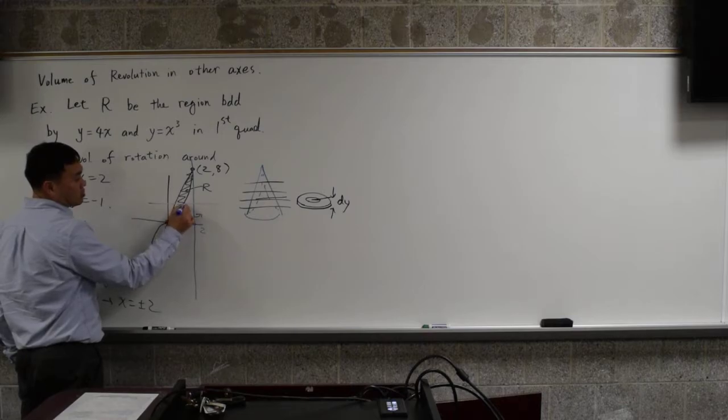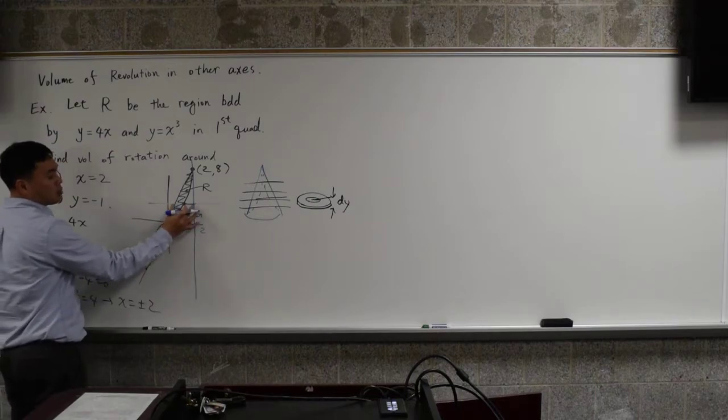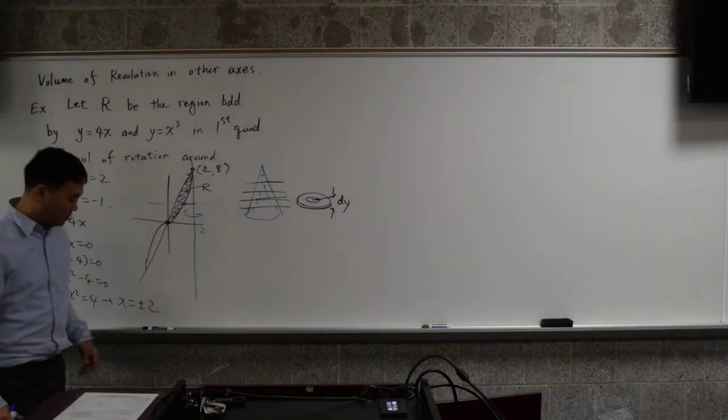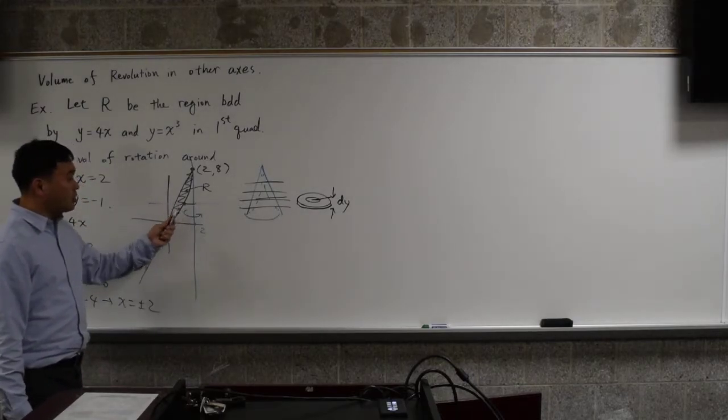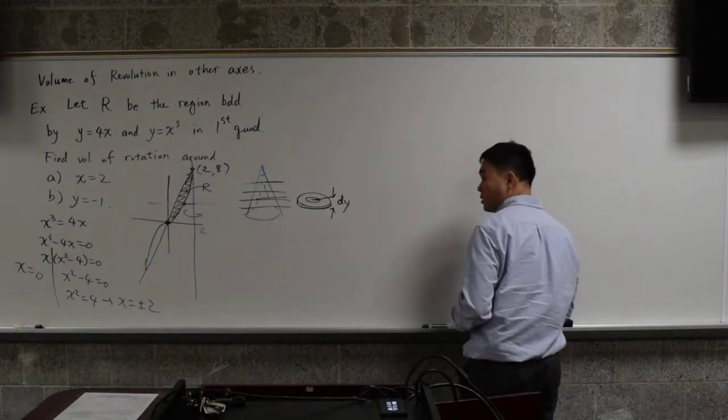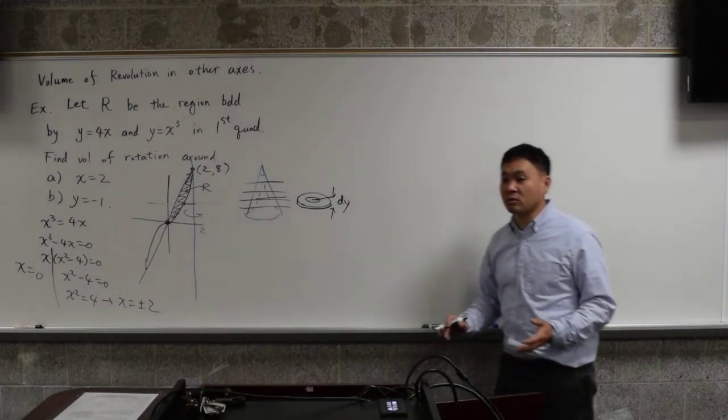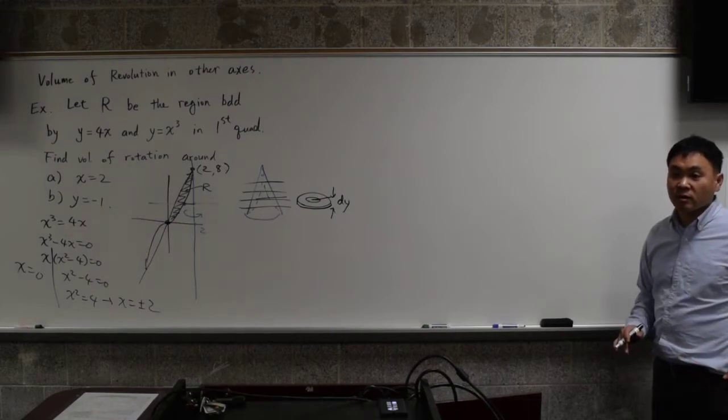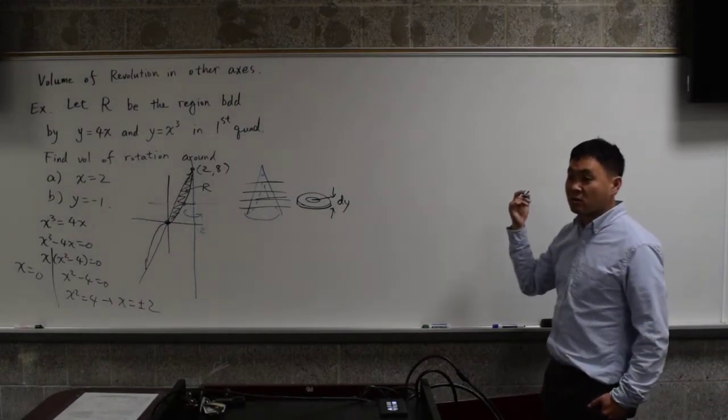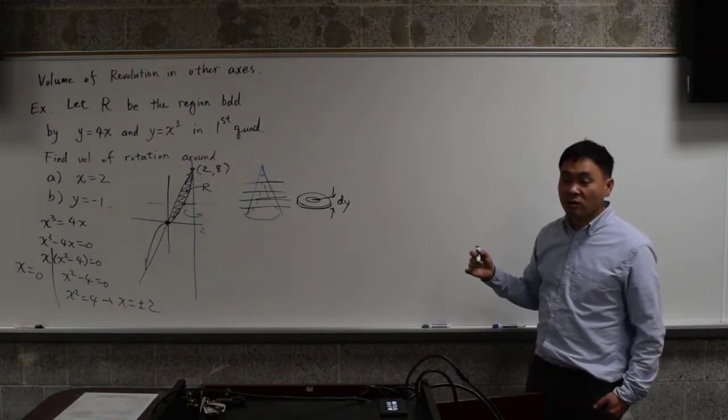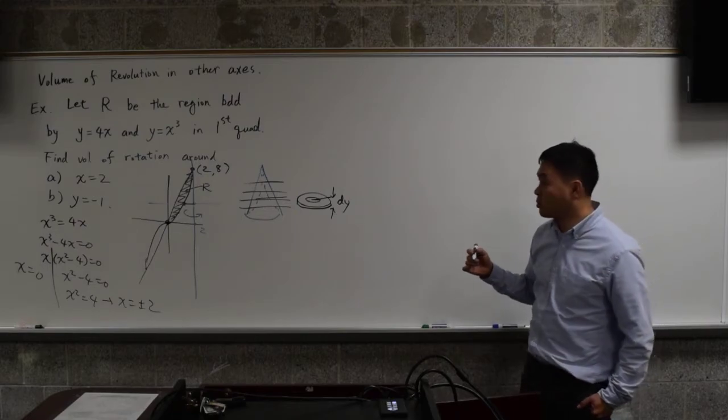And then we also need the small r and the big r for the washer method to work. So let's go back to this picture and think about what the small r and the big r is. If we took a cross section here, then the small r would be the distance between these two graphs, whereas the big r would be this one, from here to there. These are horizontal distances, which means we need the distance between the x coordinates. If you want the horizontal distance, you need the distance between the x coordinates. If you need the vertical distance, you need the distance between the y coordinates.